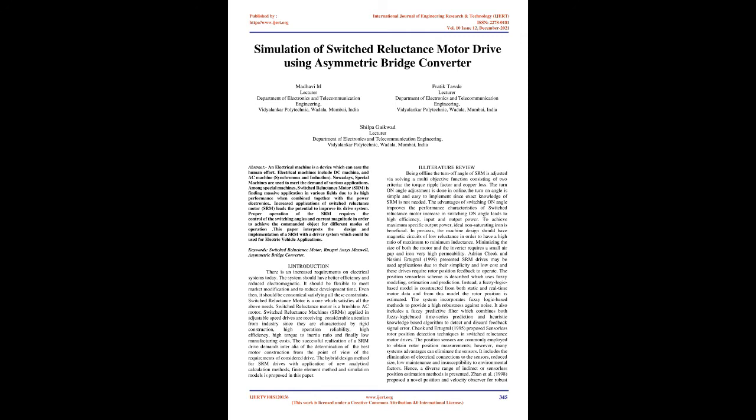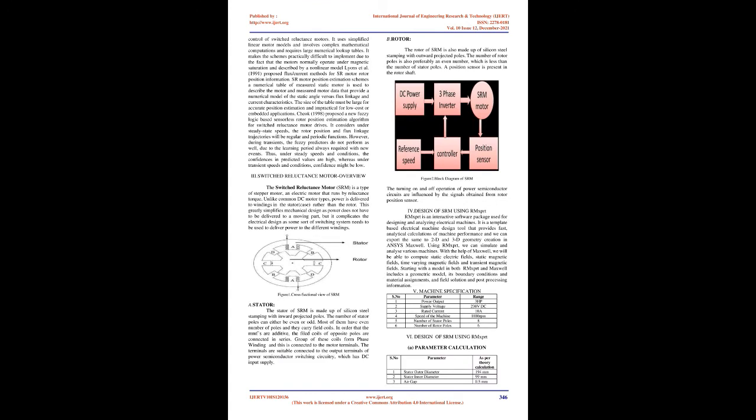Literature Review: Being offline, the turn-off angle of SRM is adjusted via solving a multi-objective function consisting of two criteria: the torque ripple factor and copper loss. The turn-on angle adjustment is done online. The turn-on angle is simple and easy to implement since exact knowledge of SRM is not needed. The advantages of switching angle improve the performance characteristics. To achieve maximum specific output power, ideal non-saturating iron is beneficial. In practice, the machine design should have magnetic circuits of low reluctance in order to have a high ratio of maximum to minimum inductance. Minimizing the size of both the motor and the inverter requires a small air gap and iron with very high permeability.